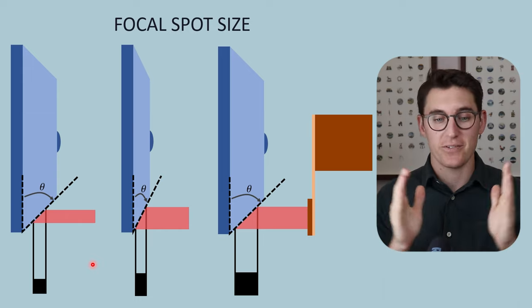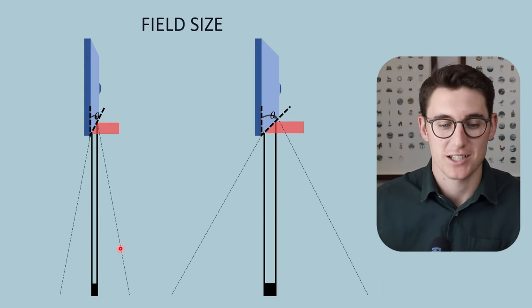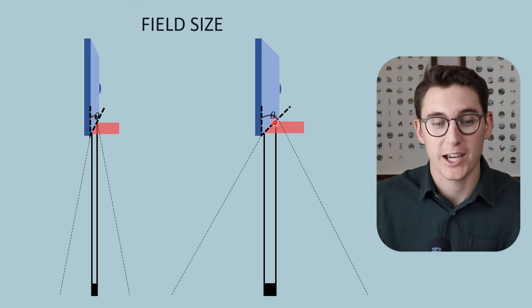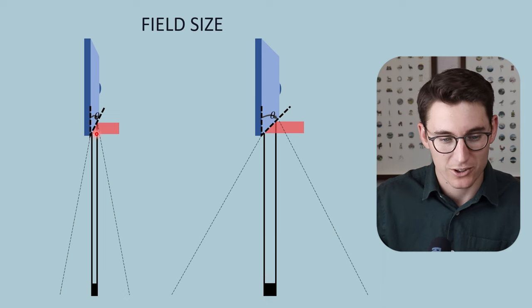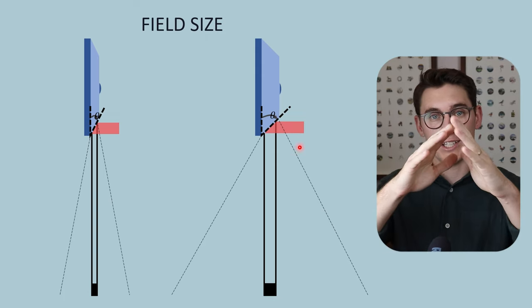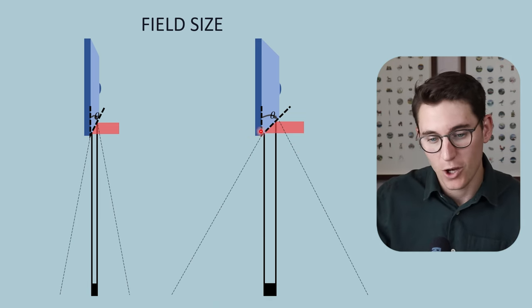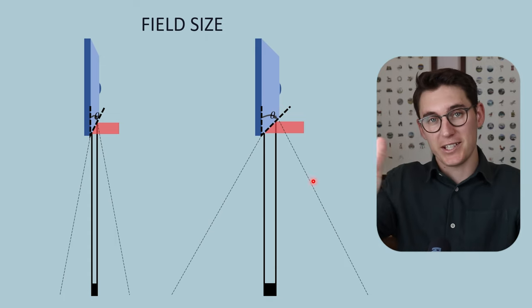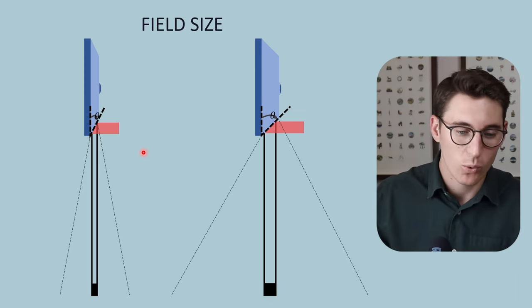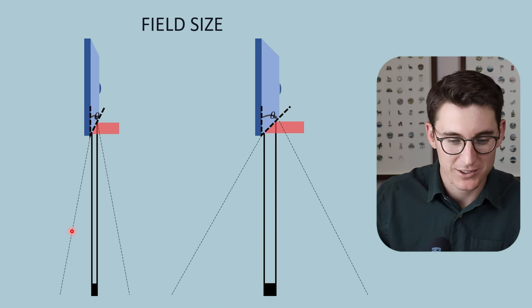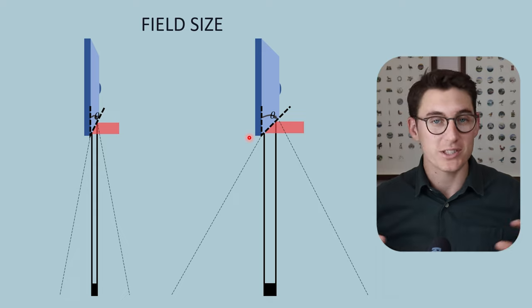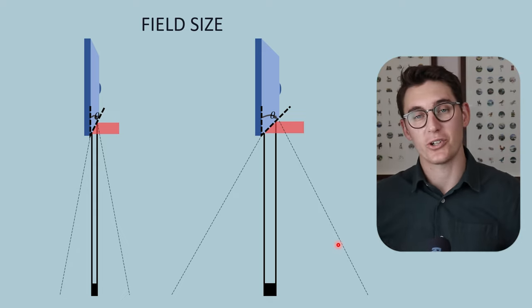Changing the anode angle also affects field size. With a large anode angle on the right and a small anode angle on the left using the same electron beam: the large anode angle gives a wider effective focal spot and larger field size — the area of x-rays heading towards our patient. So if we're imaging a large body structure like the entire abdomen, we may not be able to use a small anode angle because the field size won't be large enough, requiring us to increase the anode angle at the expense of a larger effective focal spot and more geometric blurring.